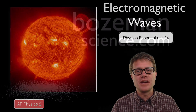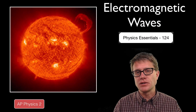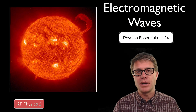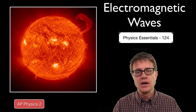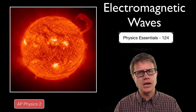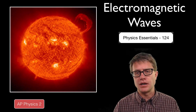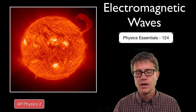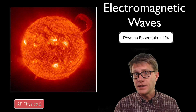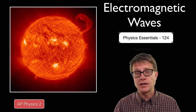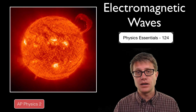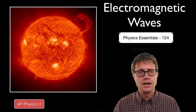Hi, it is Mr. Andersen and this is AP Physics Essentials video 124. It is on electromagnetic waves, which are the oscillations that create electromagnetic radiation. And they are important. Light is electromagnetic radiation and therefore it is carried in these electromagnetic waves.